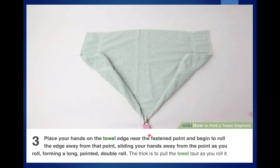Once you've done that, you're going to place your hands on the towel edge near the fastened point and begin to roll the edge away from that point. Sliding your hands away from the point as you roll, forming a long pointed double roll. The trick is to pull the towel tight as you roll it in — both sides. Try and keep it nice and tight.